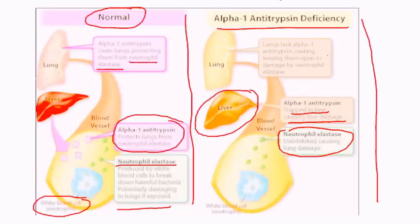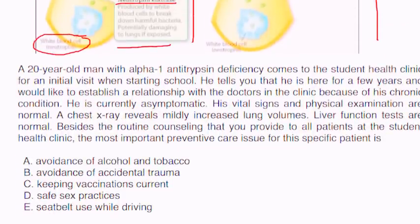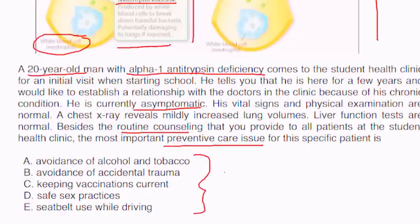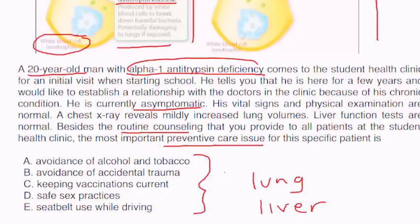Clinical vignette: A 20-year-old man with known alpha-1 antitrypsin deficiency presents to the student clinic. He is asymptomatic, vital signs and exam are normal. Chest X-ray shows mildly increased lung volumes; liver function tests are normal. The most important preventive care issue for this specific patient — given that the two main organs at risk are lung and liver — is counseling to avoid smoking and avoid alcohol.